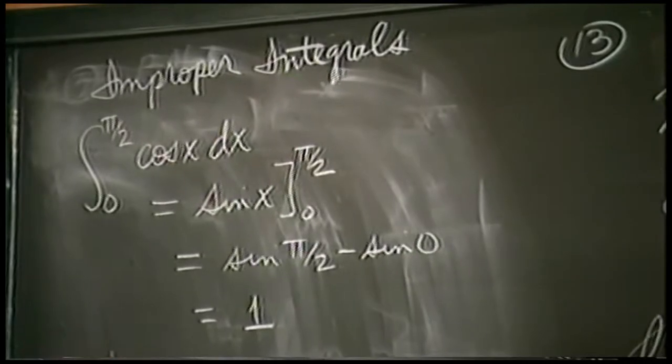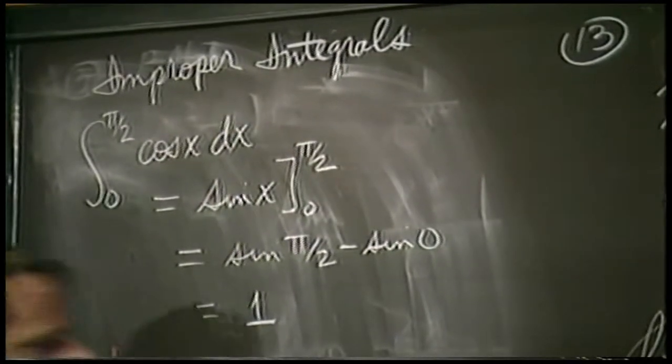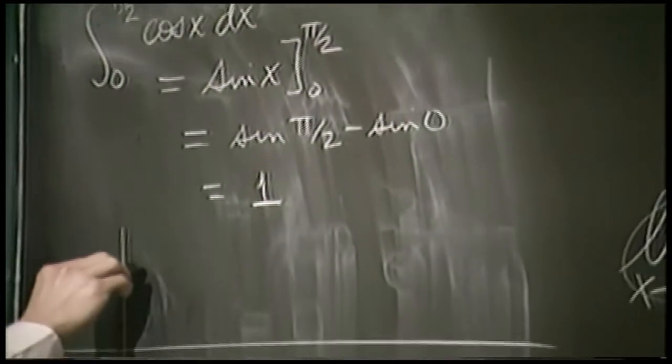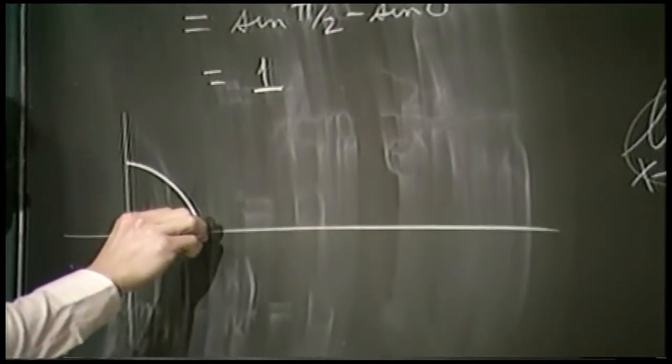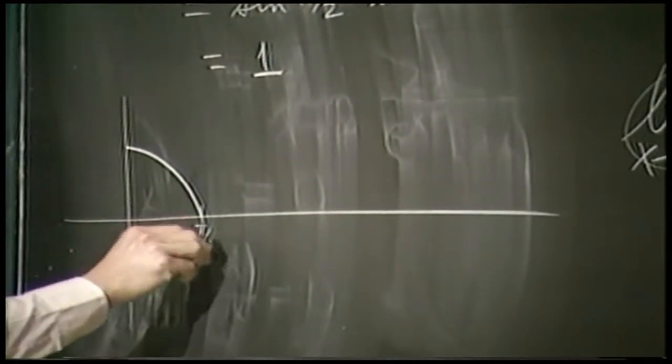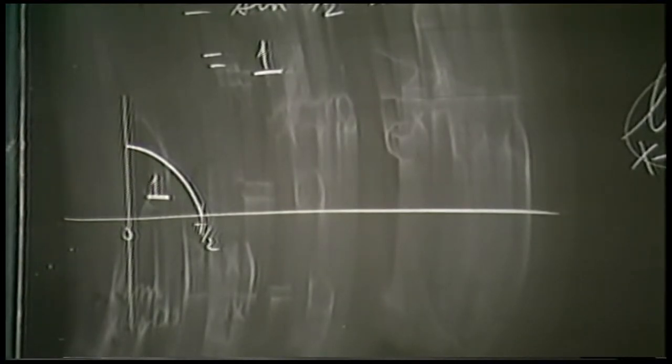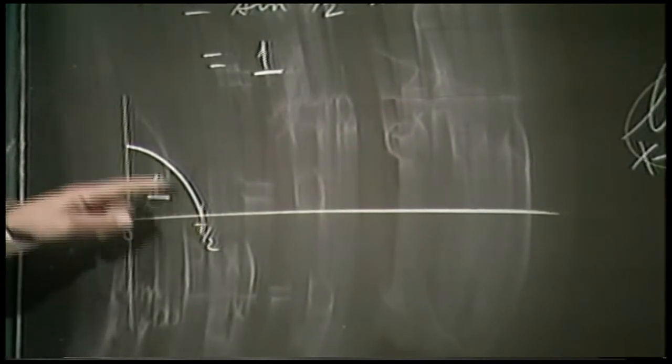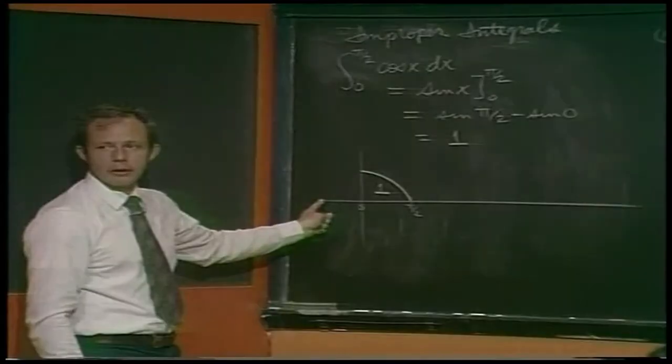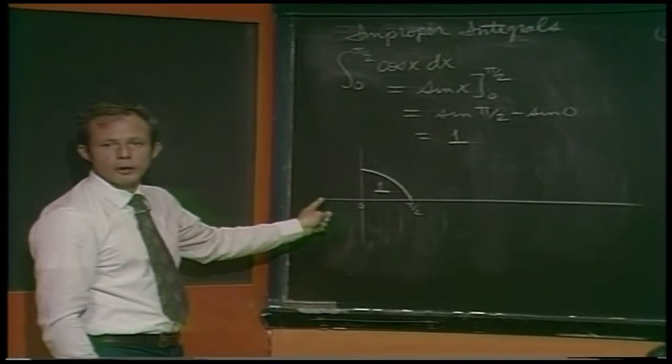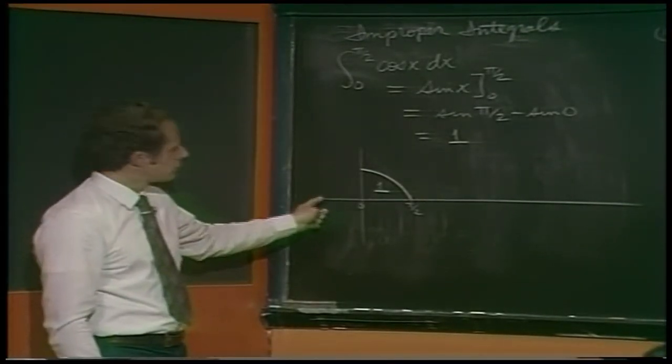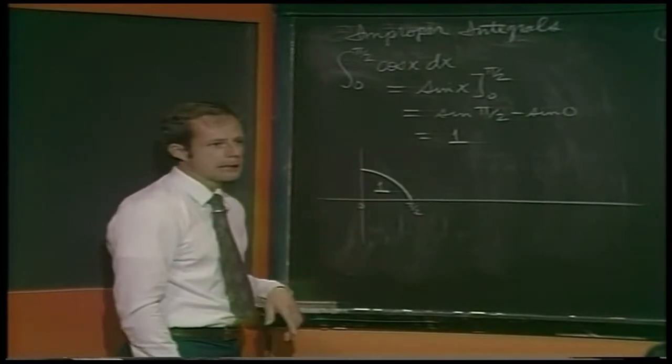So if you were to graph the cosine function, what I've just said is if you take that portion right there, the area is 1, and that's something you might just keep in the back of your mind. It's handy, especially in physics courses and things. How much area is there under one loop of a cosine or a sine curve? Two units under an entire peak or valley, whichever way you want to look at it.